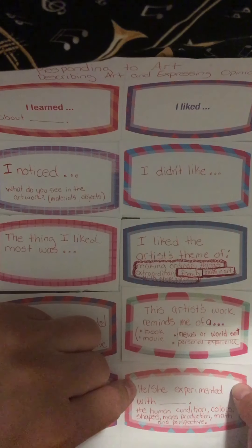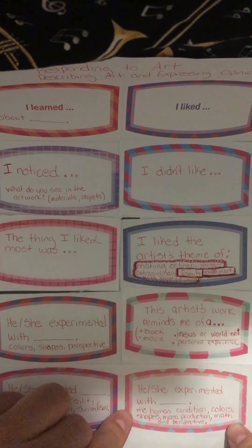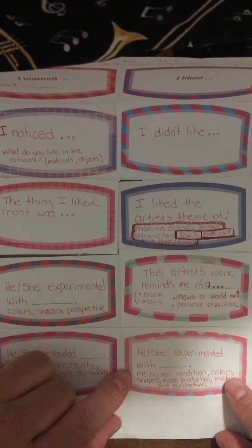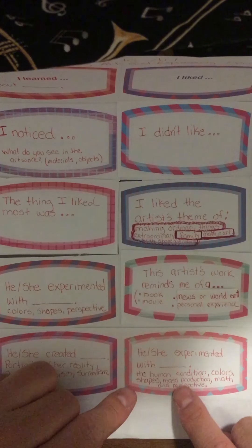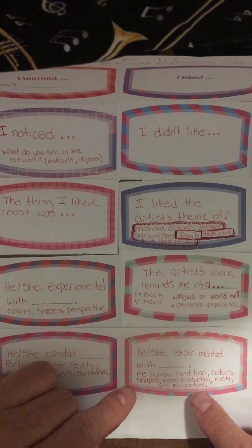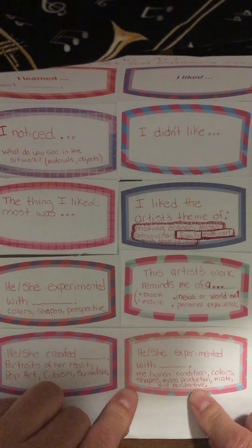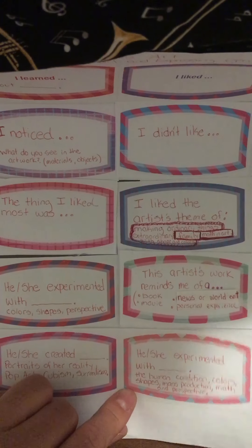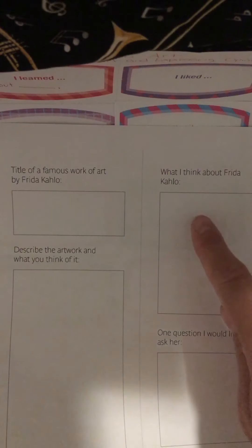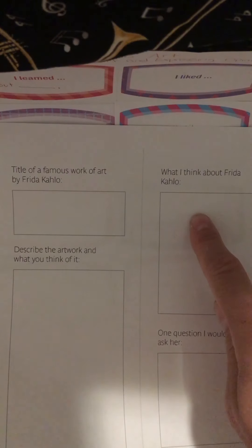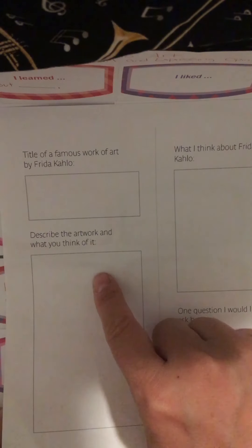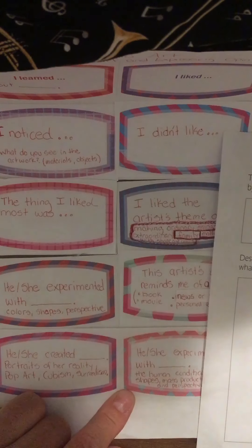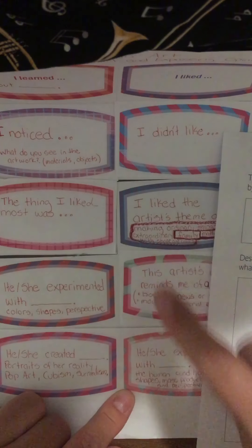He or she experimented with: the human condition, colors, shapes, mass production, and perspective. For these, when we talk about what I think about the particular artist, you can use these here. Describe the artwork — you can use both of these language stems here.